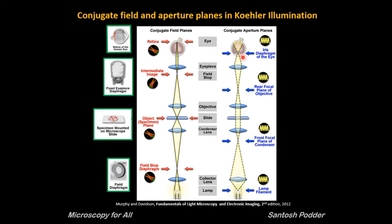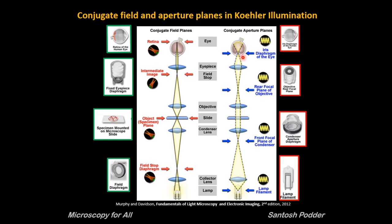To see the illumination planes, we need a Bertrand lens or telescope lens — you have to take your eyepiece out and look through it. The aperture planes are responsible for resolving power and the contrasting techniques, whereas the field planes contain images formed by the optical components of the microscope. So have you ever thought that these eight planes work together to give you a nice image? I hope now you will think about this next time you use your microscope.